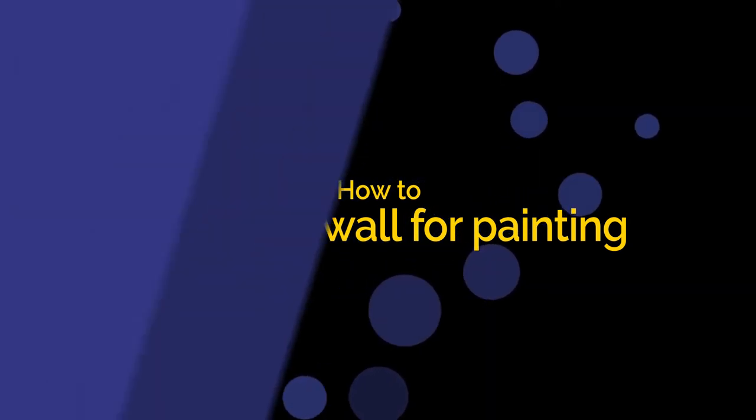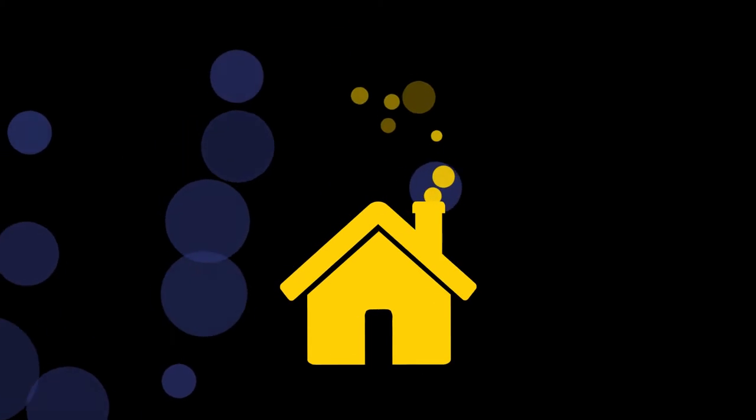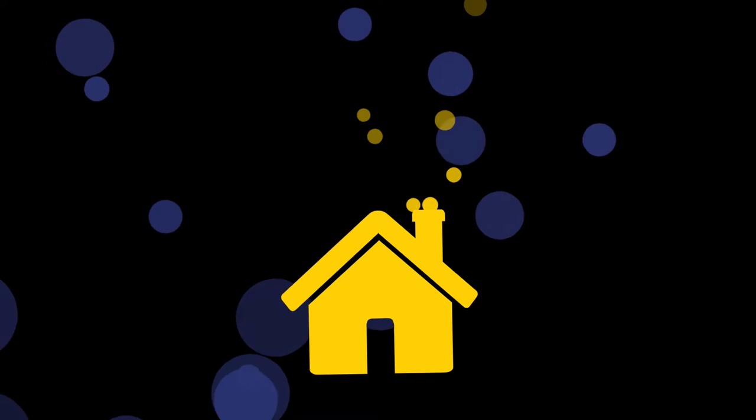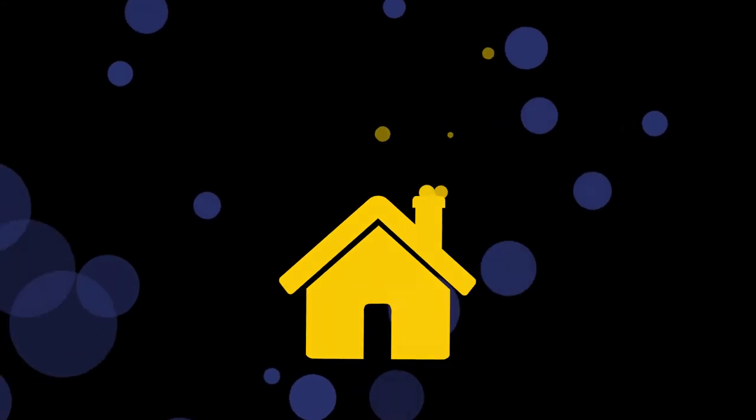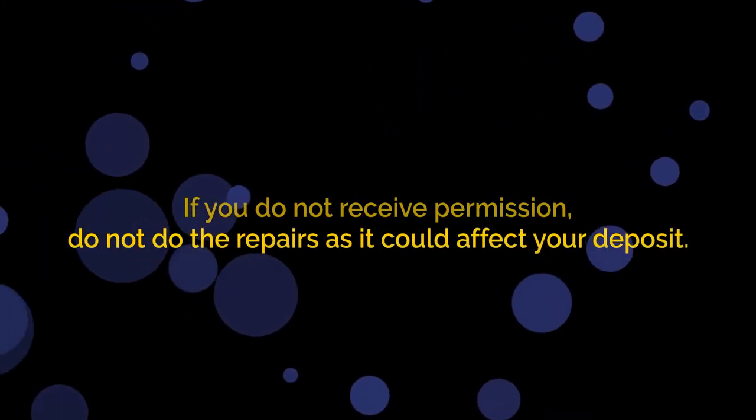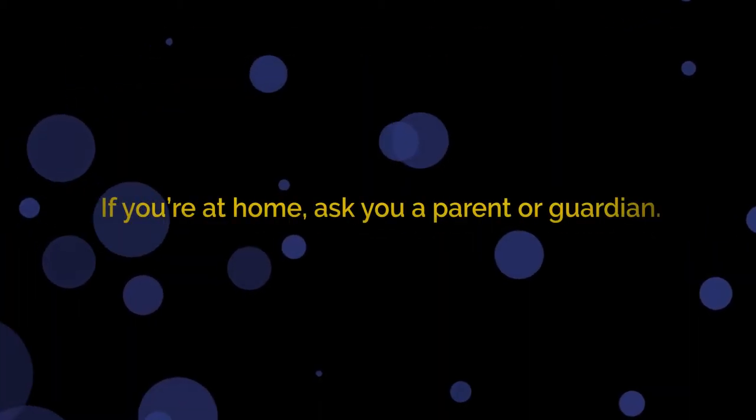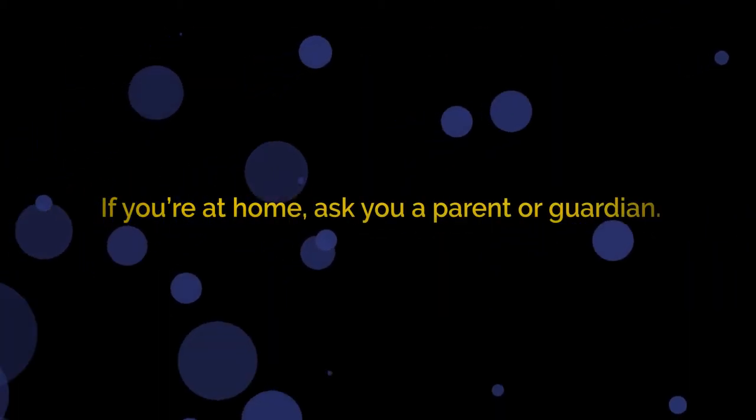Therefore, the very first thing you need to do is get permission to do the repairs. If you are living in rented accommodation, you must email the landlord or letting agent for permission. If you do not receive permission, do not do the repairs as this could affect your deposit. If you are at home, ask your parent or guardian.